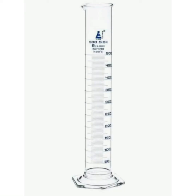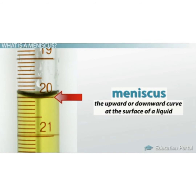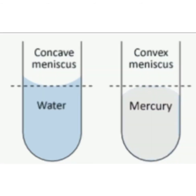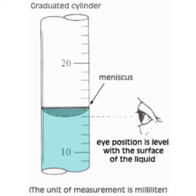A measuring cylinder is a cylindrical glass or plastic jar with markings called graduations. Its range is from 10 ml to 1000 ml. This is a common piece of laboratory equipment used to measure the volume of a liquid. When a liquid is poured into a measuring cylinder, a curve can be seen on the surface of the liquid. This curve is called the meniscus. It can be concave or convex. If it is a concave meniscus, the reading should be taken at the top of the meniscus, at eye level, to avoid parallax error.